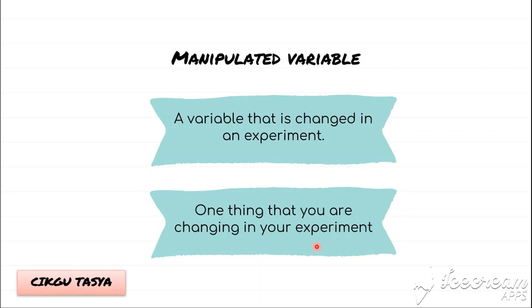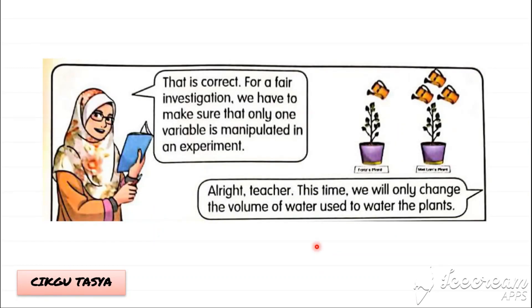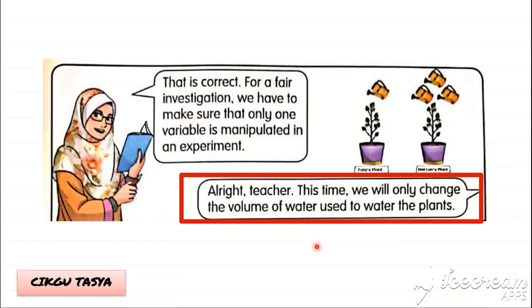That is how you find out the manipulated variable in any question or experiment given to you. When you are reading a question, you have to remember that you are the one doing that experiment, and think about what thing you have changed to get your result — that is how you find out the manipulated variable. They only changed one thing, which is the volume of water used to water the plants.